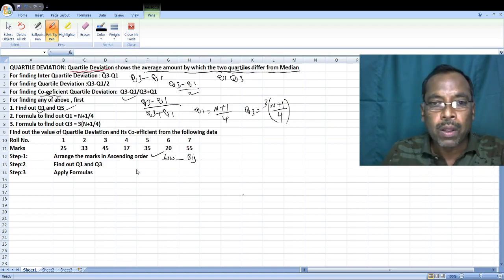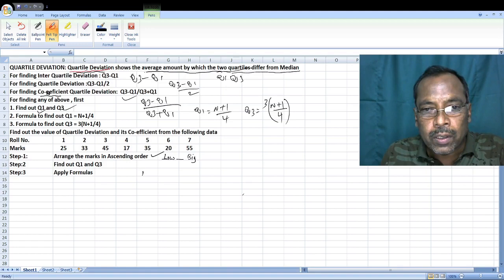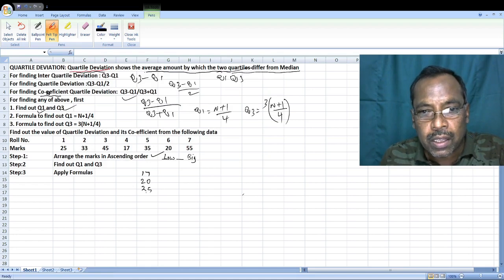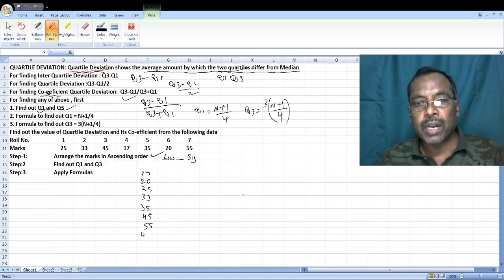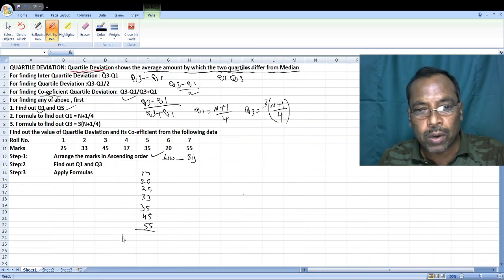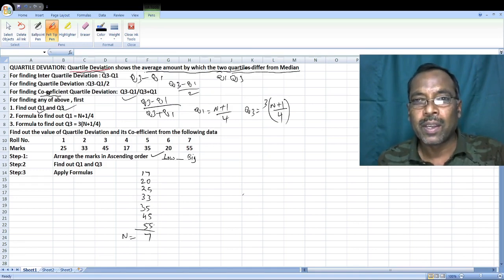First value is 17, then 20, then 25, then 33, then 35, then 45, then 55. Total n is equal to 7.